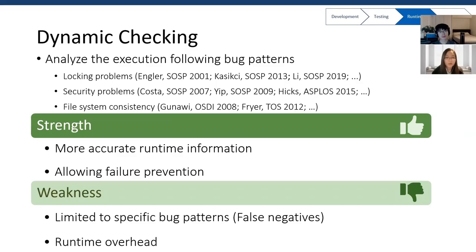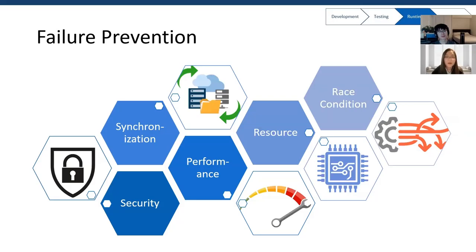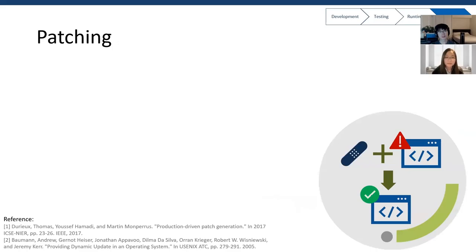Of course, this approach has its own drawback — it introduces high runtime overhead for the extra checking. Also, like static checking, it only targets particular bug patterns. When some errors are detected or predicted at runtime, runtime failure prevention techniques can try to mask or work around the error, preventing failures like deadlocks, memory corruptions, performance degradations, resource leaks, and others.